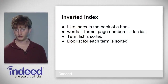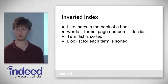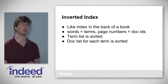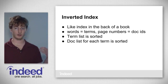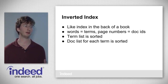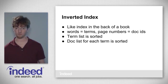An inverted index is like the index in the back of a book. The words in a book's index equate to what we call terms in an inverted index, and the page numbers equate to what we call docs. We have a list of terms, and for each term we have a list of docs. Our term list is sorted — that's important because we need to binary search it to find the term we're looking for. Our doc list is also sorted, and you'll see why in a second.